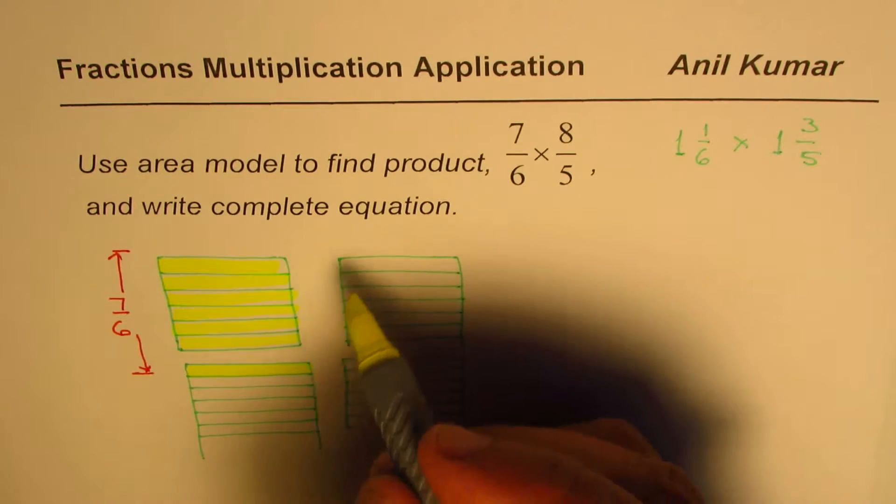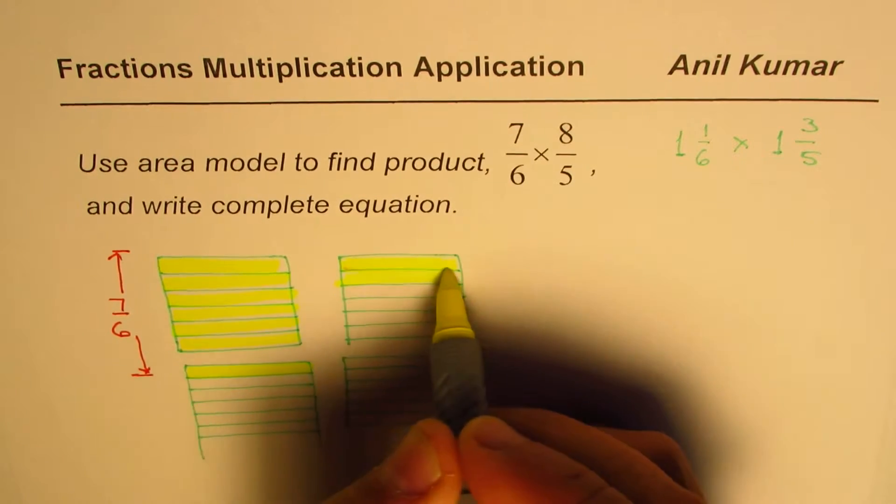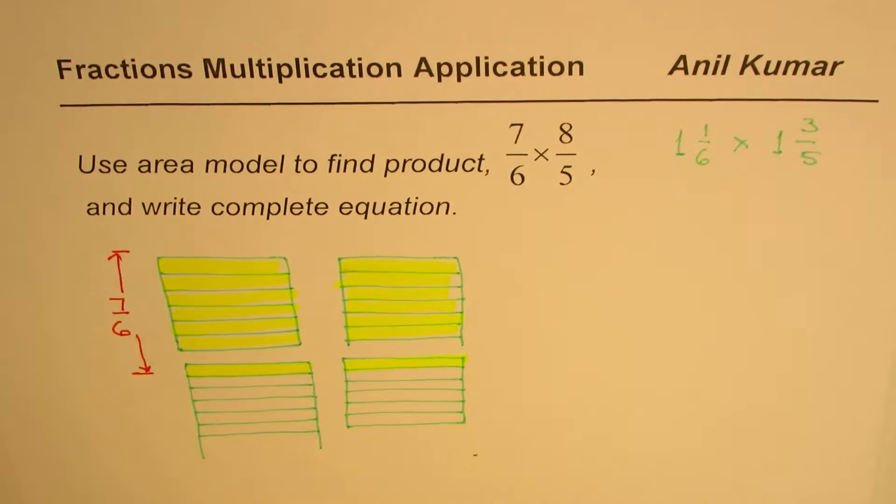So when we copy this, we have to copy the highlighted portion also, 6 out of these. Correct. So 1, 2, 3, 4, 5, 6. That is the whole. And 1/6. Correct.